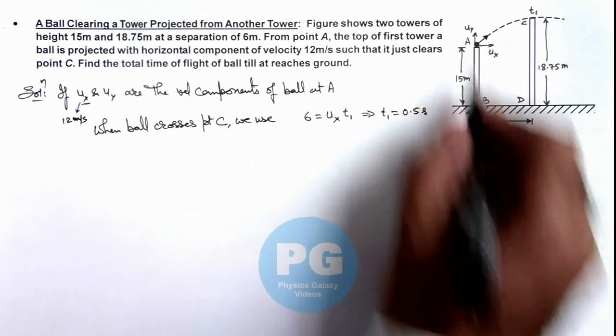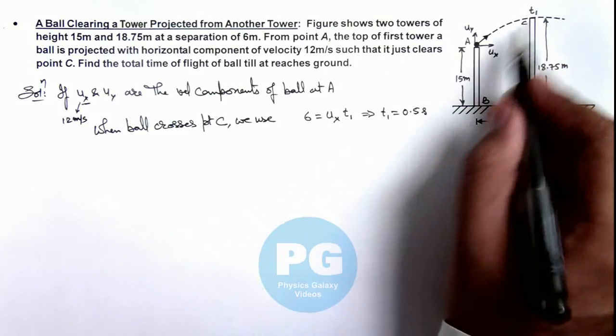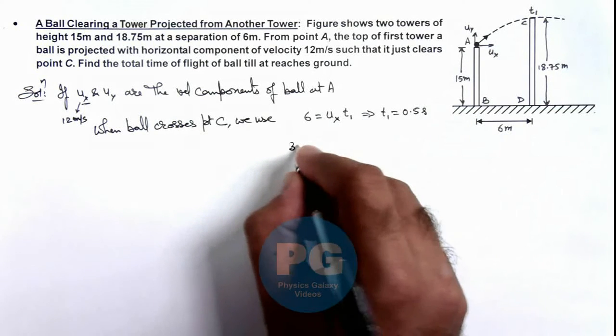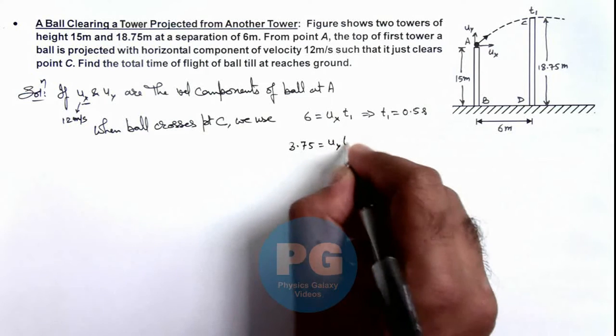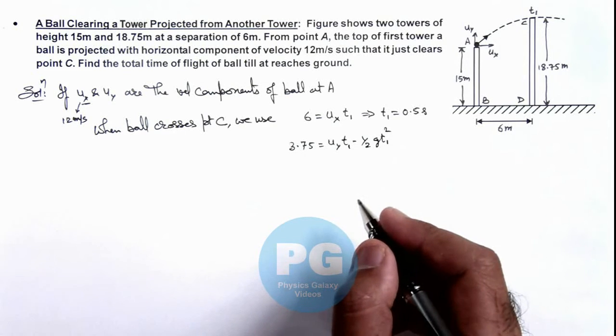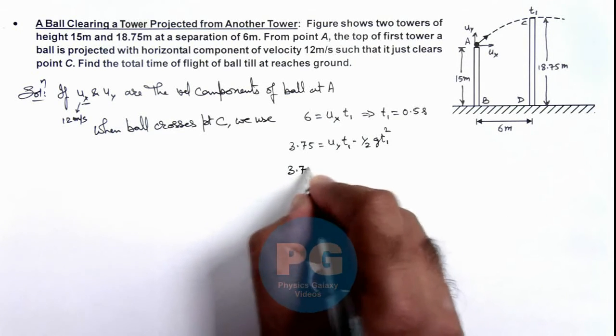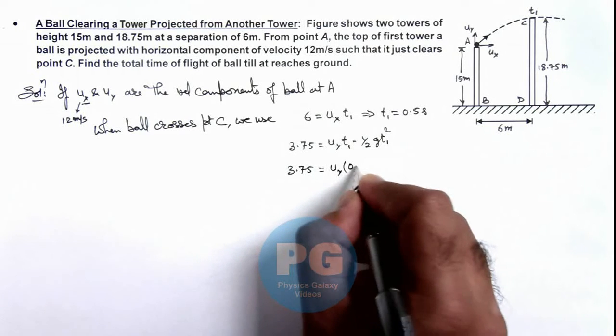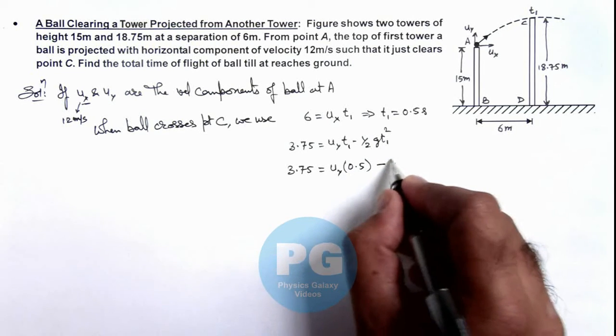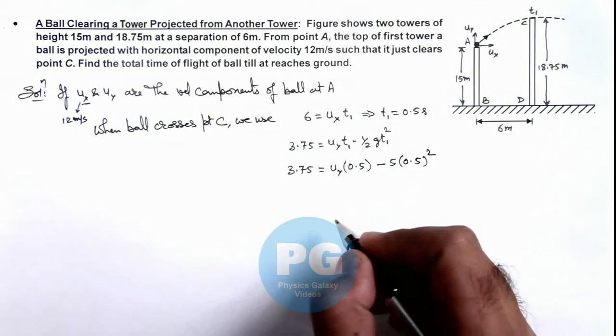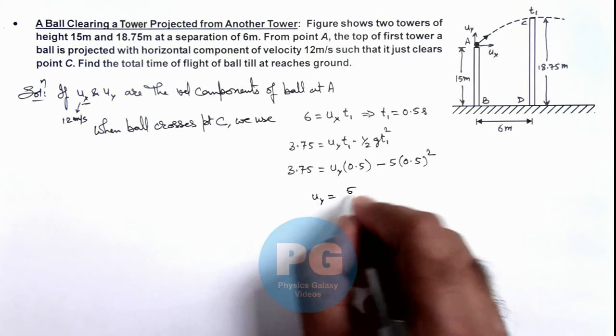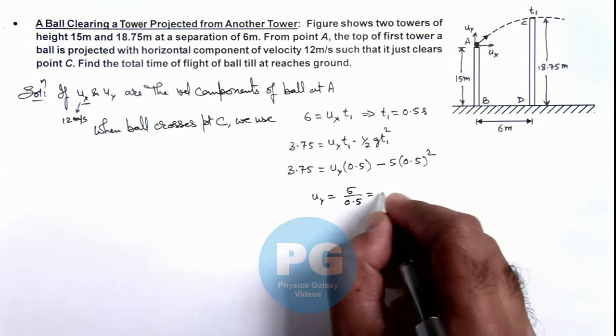The same we can use in y direction where we can write the point C is at a height 3.75 meter above point A. So we can write 3.75 is equal to uy*t minus half g*t square. If we take g as 10, this is 5 multiplied by 0.5 square. On simplifying we are getting the value of uy is equal to this 5 divided by 0.5 which is equal to 10 meters per second.